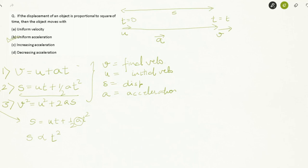Now, what would be the case in case of uniform velocity? Let's explore option A. In case of uniform velocity, A will be 0. So putting A equals 0 in the second equation, I get S equals only UT. In this case, S is directly proportional to T and not T squared.